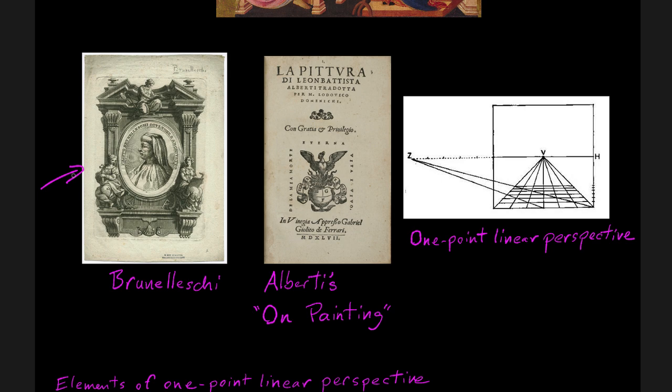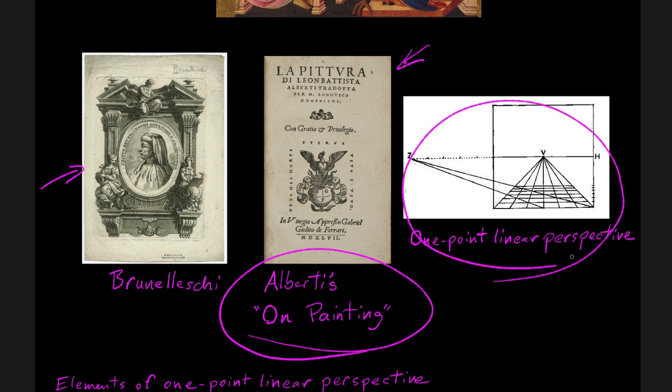In 1420 in Florence he demonstrated this system and 15 years later another brilliant Renaissance man, Alberti, codified what Brunelleschi had discovered. He explained the system of linear perspective for artists. So he publishes a book called On Painting in 1435 and we have a later version of that book right here. And inside that book he really gives the formula for linear perspective. So let's just spend a moment talking about how this system works.